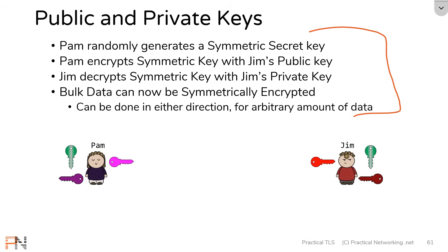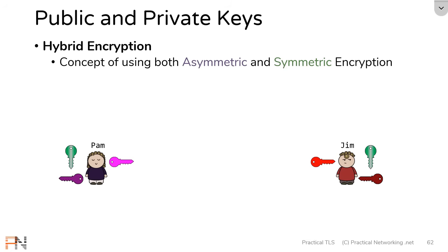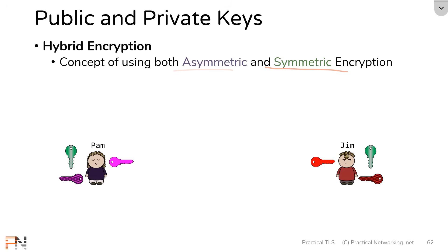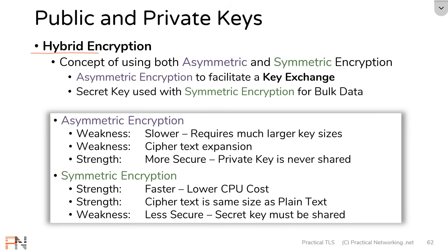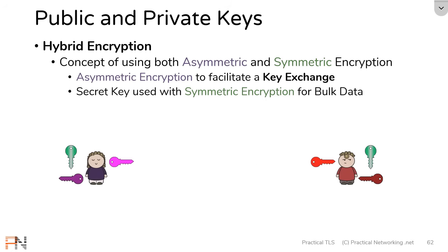This concept is referred to as hybrid encryption — the idea of using both asymmetric and symmetric encryption at different points. You use asymmetric encryption to facilitate a key exchange, and then use that key with symmetric encryption to protect bulk data. This gets you the best of both worlds: the security of asymmetric encryption for sharing a key, and the efficiency of symmetric encryption for bulk data transfer. This is exactly the method every secure communication protocol uses — SSL, TLS, IPsec, and SSH all protect bulk data transfers this way.